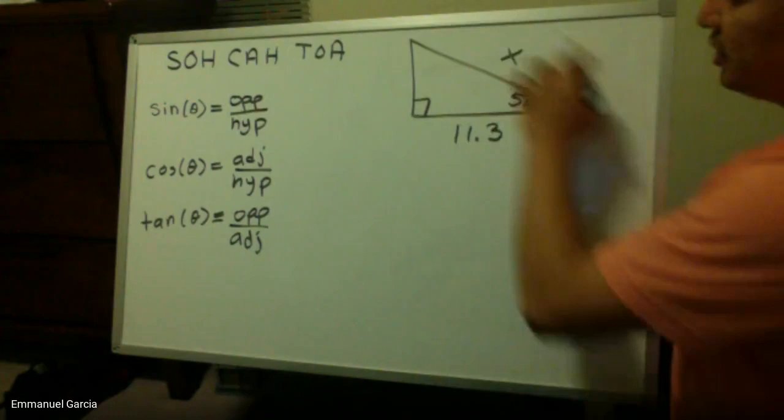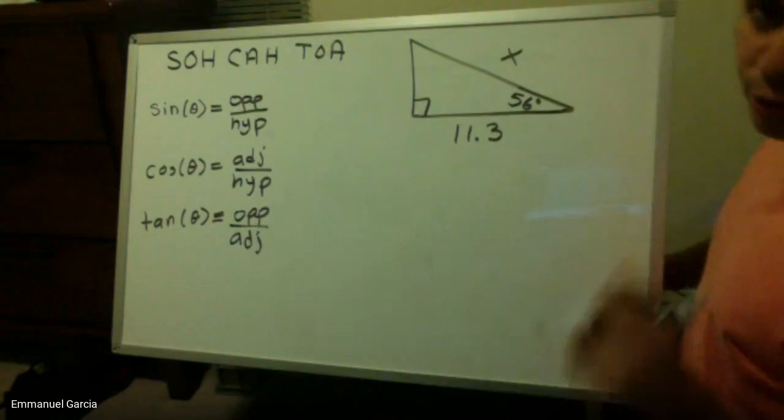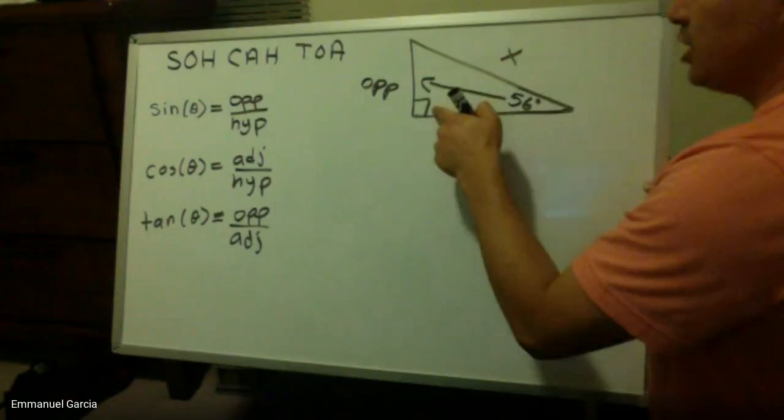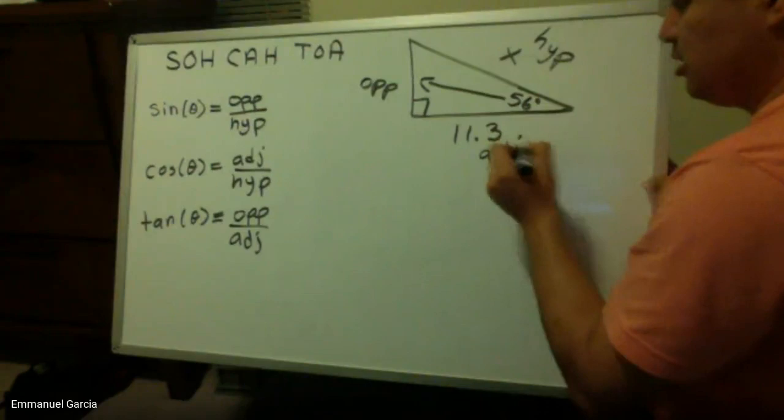Step one, we need to identify each side of the right triangle so we can start figuring out which trig function to use. I start labeling the side across my angle as my opposite side. The side across my right angle is my hypotenuse and the side next to my angle is the adjacent.